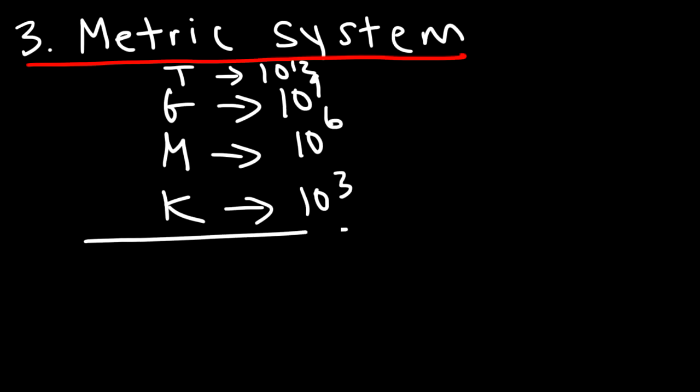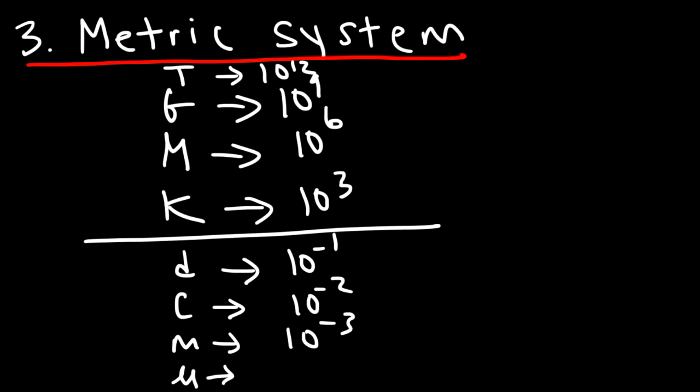Now let's say this is the baseline. Below that we have things like deci, which is 10 to the minus 1. Centi, 10 to the negative 2. Milli, that's 10 to the minus 3. Micro, it's 10 to the negative 6. Nano, that's 10 to the negative 9. And pico, which is 10 to the minus 12.